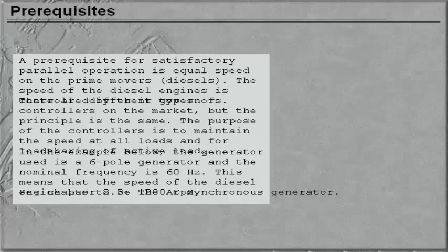In the example below, the generator used is a six-pole generator and the nominal frequency is 60 Hz. This means that the speed of the diesel engine has to be 1,200 rpm.